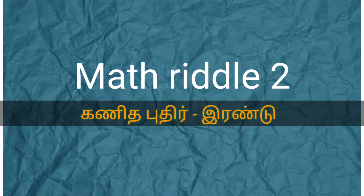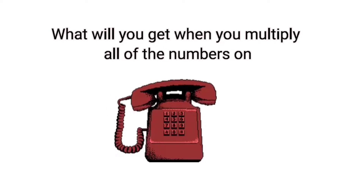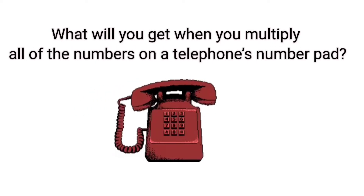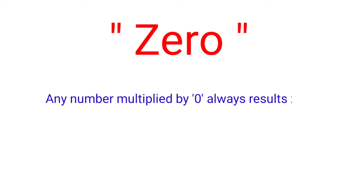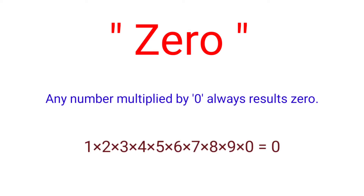Riddle Number 2: What will you get when you multiply all of the numbers on a telephone's number pad? It's the easiest answer. The answer is zero, because any number multiplied by zero always results in zero. Since the telephone's number pad includes zero, the product of all numbers is zero.